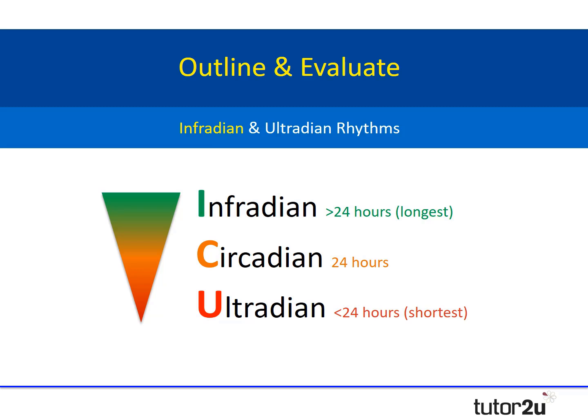Before we begin, it's worth noting that there are three different biological rhythms: infradian, circadian, and ultradian. An easy way to remember these is using the phrase 'I see you,' with the longest at the top and the shortest at the bottom. Infradian is longer than 24 hours, ultradian is less than 24 hours, and circadian in the middle is approximately 24 hours.